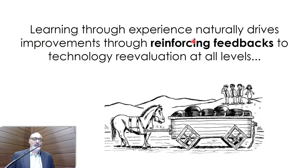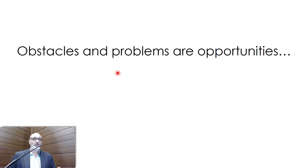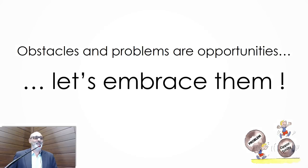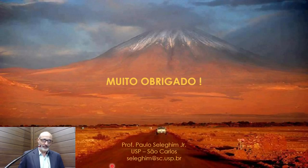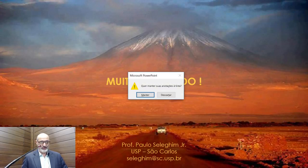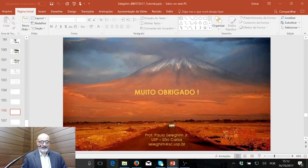As an example of new technology inside the industrial limit: high-performance extraction. Sugarcane bagasse with traditional extraction has roughly 2% residual sucrose — a problem for pretreatment and hydrolysis. If you develop high-performance extraction sending only 0.1% residual sucrose, it enables significant process improvements. The point is: learning through experience naturally drives improvement through reinforcing feedbacks to technology re-evaluation at all levels. I showed many obstacles and problems, but the idea is not to demotivate you — these problems are opportunities. Let's embrace them. Thank you very much.